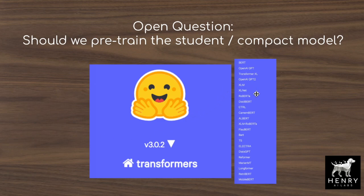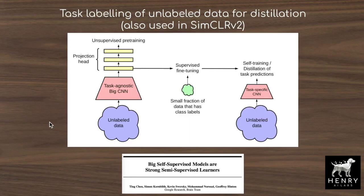This paper addresses the question: should we pre-train the student or compact model? We have all these open-source models accessible from the Hugging Face Transformers library, but we want to compress a model like BERT into a smaller compact model using knowledge distillation, predicting the soft labels of BERT-large with our smaller model. The question this paper explores is whether we should also pre-train that smaller model with the masked language modeling objective.